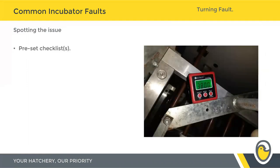For spotting the issue with turning systems, preset checklists are almost more important here than for anything else. A deterioration in turn angle is not usually something that's fine one day and a problem the next — it's going to be a slow degradation over the 10 to 20-year lifespan of an incubator, and at some point it will start impacting your chick quality. By monitoring this, you can forecast that degradation and plan maintenance at convenient times, rather than when you're trying to get chicks out the door. Regularly taking and documenting the turn angles of your individual trolleys in individual machines is a great way of spotting that.